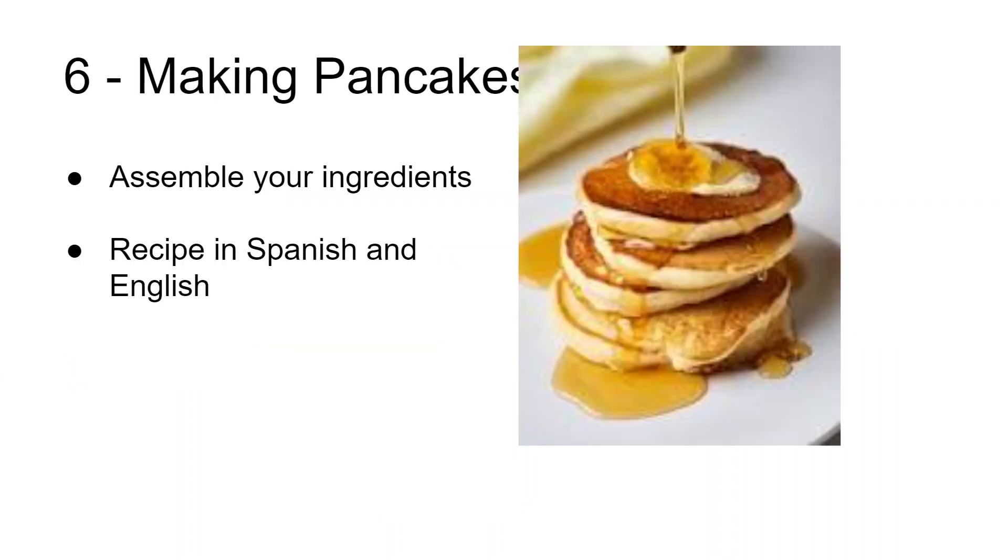This is Activity Number 6: Pancakes. That's right, you and your child are going to make pancakes. In your box you should find a recipe both in English and Spanish. Before you get started, you want to assemble all of the ingredients. You'll need a bowl, a pan to fry the pancakes in, and a spatula to turn them over.